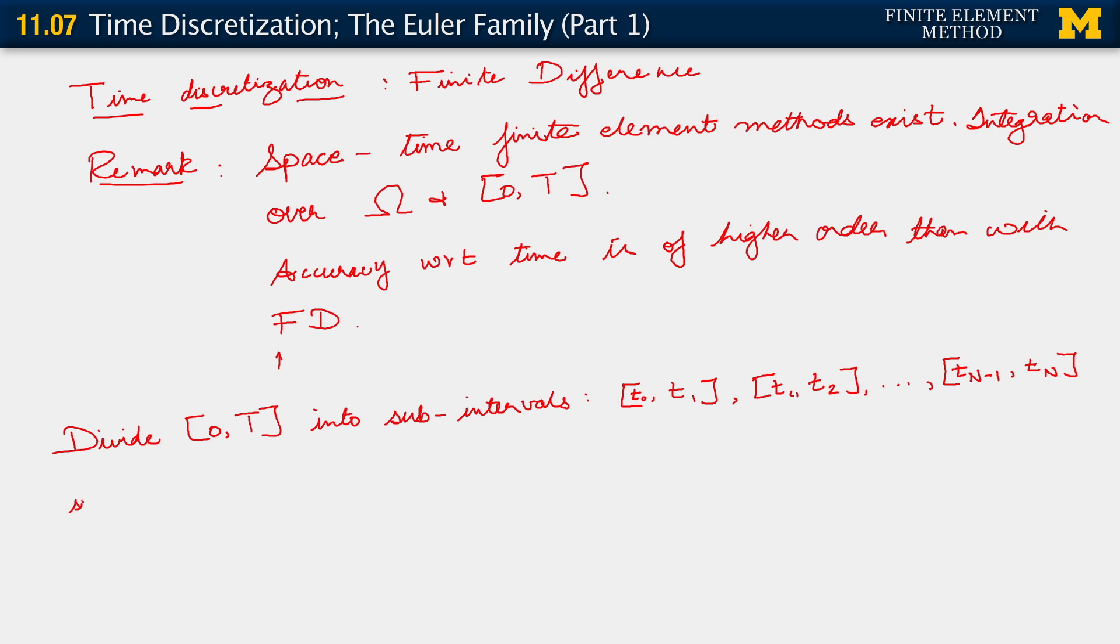So we have all of these subintervals. And what we also imply here of course is that t0 is equal to 0, and tn equals capital T. So if you look at this, what we've implied is that we've divided our total time interval into capital N sub-intervals. So clearly here we have N sub-intervals.